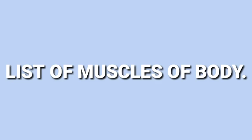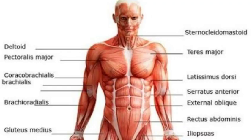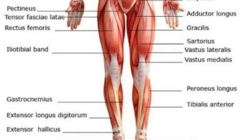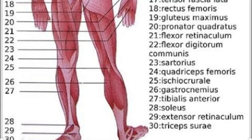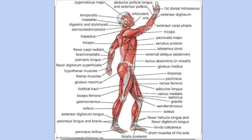Hello friends, welcome to Nursing Basics. Today we are studying about muscles of the body and the list of muscles of the body. Do you know there are 639 muscles in the body and they function together to work properly, enabling movement and locomotion of the body? All the muscles of the body are categorized under seven divisions.